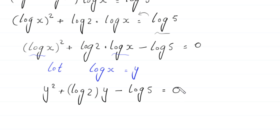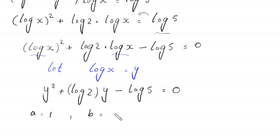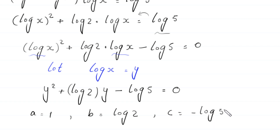This is a quadratic equation and it is not factorable, so we solve it by the quadratic formula. In this equation, a is equal to 1, b is equal to log of 2, and c is equal to negative log of 5.